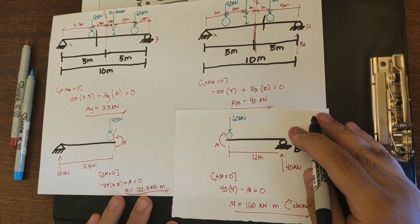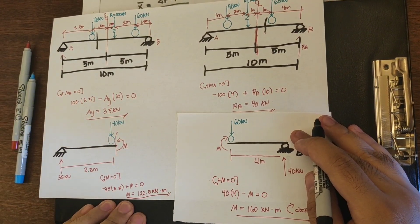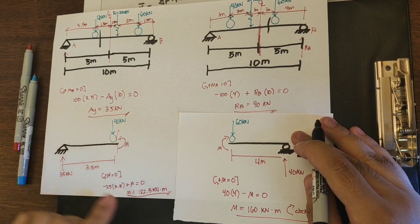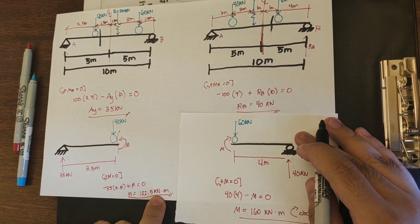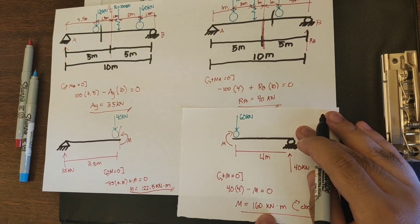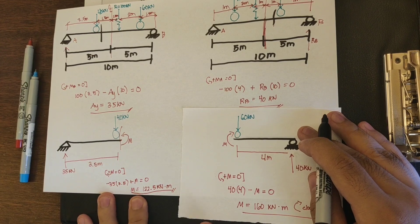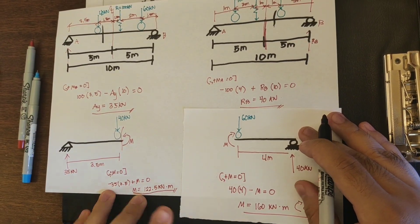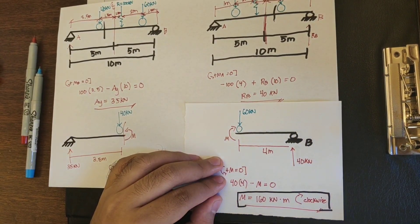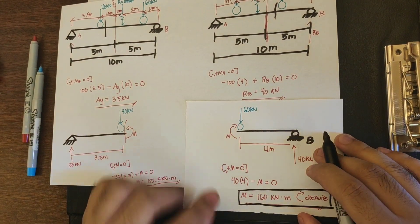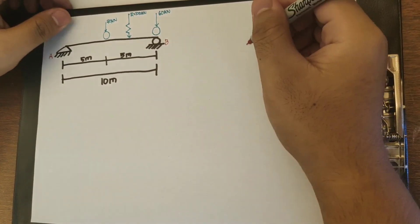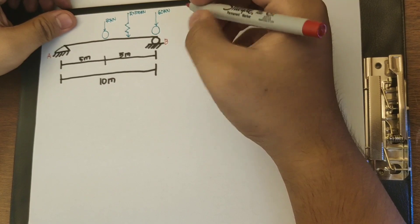After solving all the bending moments, we find the highest value to identify the maximum bending moment. The 40 kN axle load gave 122.5 kN·m, and the 60 kN axle load gave 160 kN·m. The maximum bending moment is therefore 160 kN·m, since it is the higher of the two values.